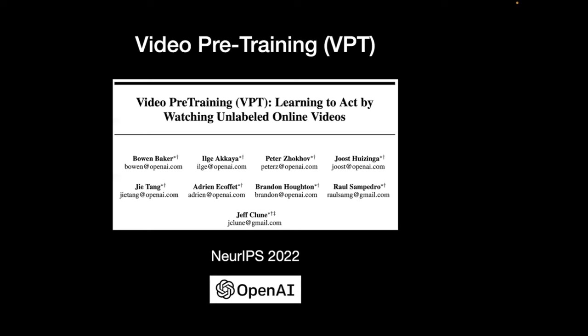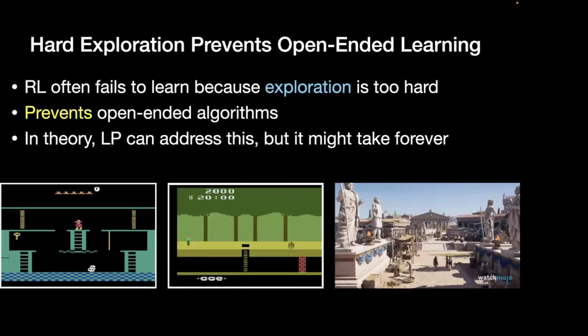The second deep dive is the paper called Video Pre-Training, or VPT, from my team at OpenAI — learning to act by watching unlabeled online videos, published at NeurIPS. The general idea is that another huge problem with open-ended research is that even if you generate a task that's interesting, it might be too hard or take too long for the agent to learn because it's a hard exploration task. Even if you generate good tasks, the whole thing might grind to a halt.